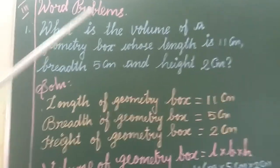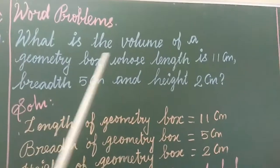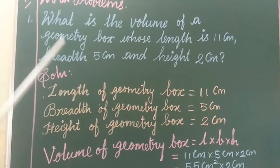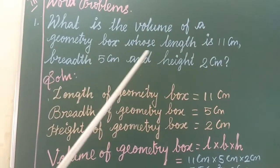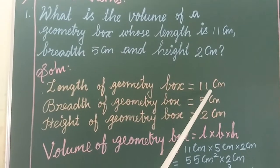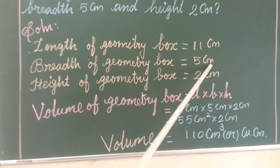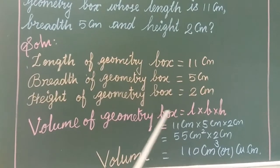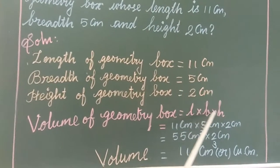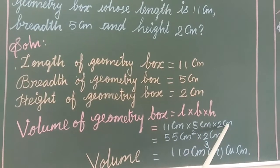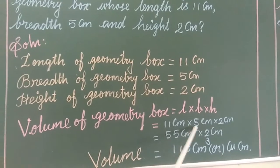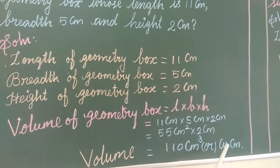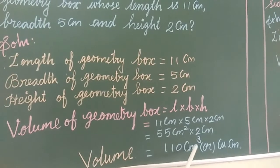The next one — word problems. First question: what is the volume of your geometry box whose length is 11 cm, breadth 5 cm, and height 2 cm? Solution: 11 × 5 = 55 cm², then 55 × 2 = 110 cm³ or cubic cm. So the volume is 110 cubic cm.